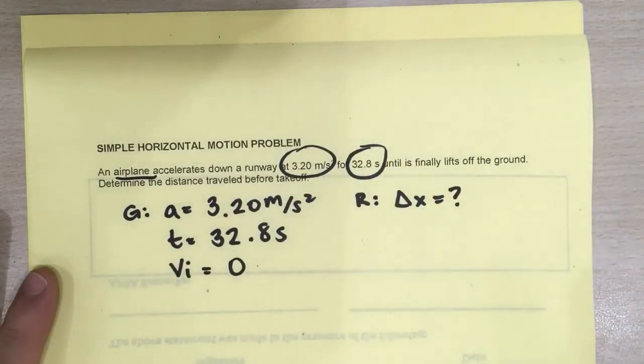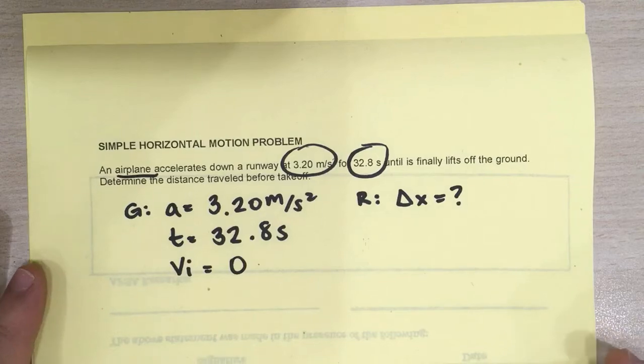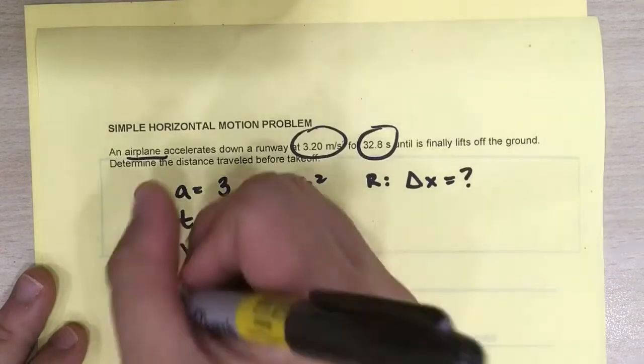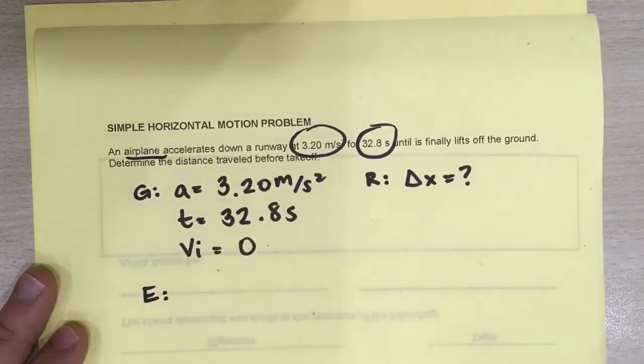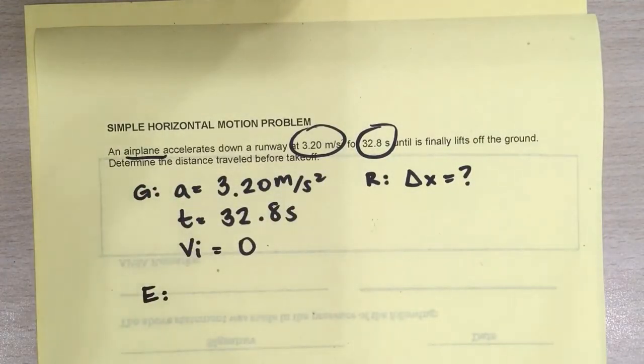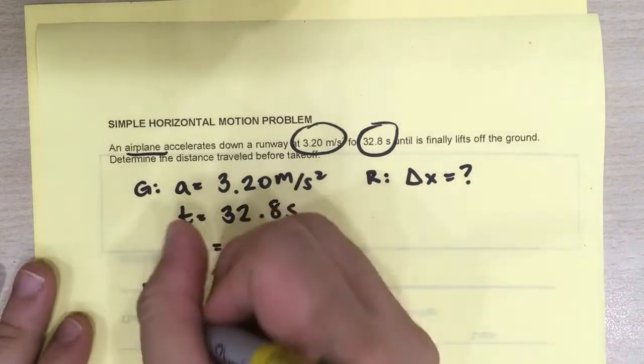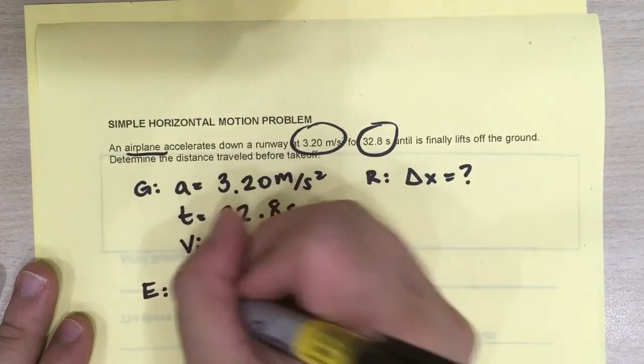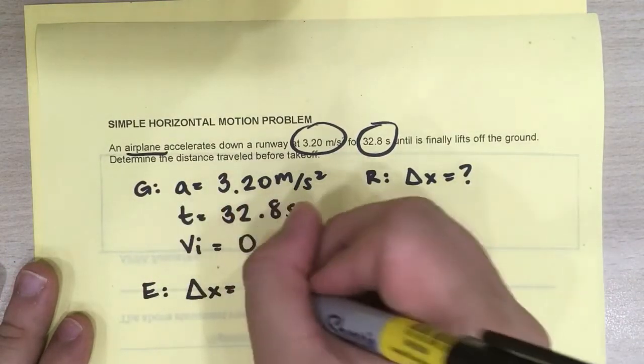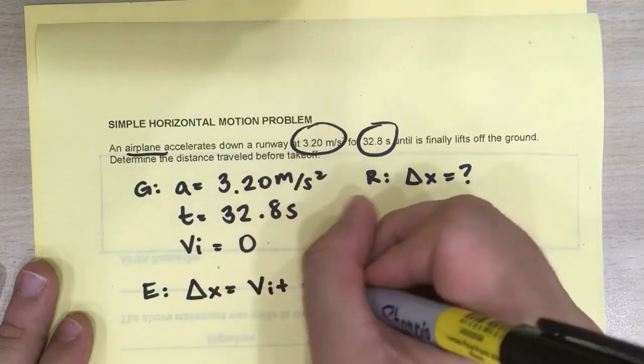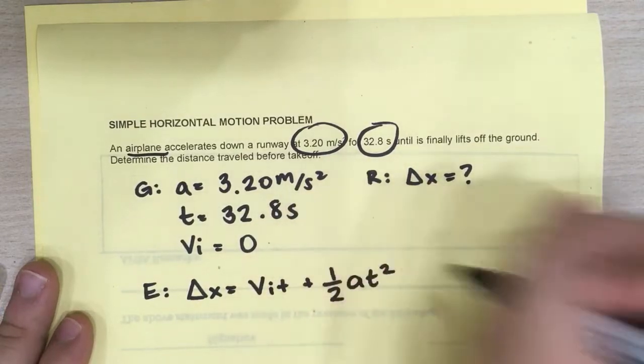Okay, so we're given delta X, we're given Vi, we're given time, we're given a. Which equation do we now use? Well, the equation that has all of these, if you look at your equations, would be the rectangle plus triangle. So that's delta X, Vi, t, one-half, a, t squared.